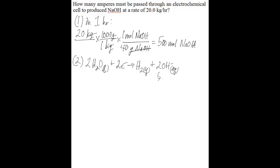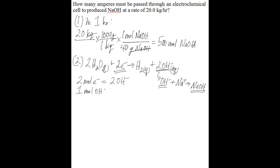It's these two hydroxides where the combination of a hydroxide plus a sodium gives you NaOH. The stoichiometry important to determining the charge in Coulombs is: for every two moles of electrons, you get two moles of hydroxide — so two moles of electrons equals two moles of hydroxide. Also, for every one mole of hydroxide, you get one mole of sodium hydroxide — so one mole of hydroxide equals one mole of sodium hydroxide.